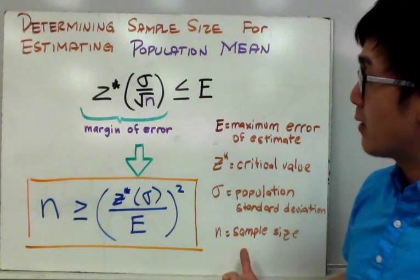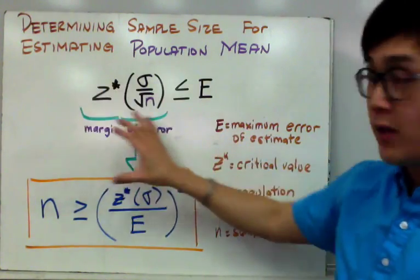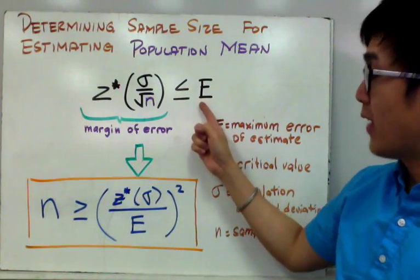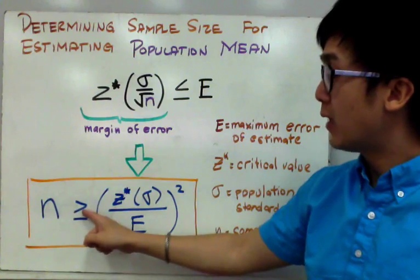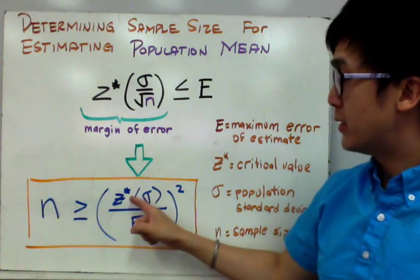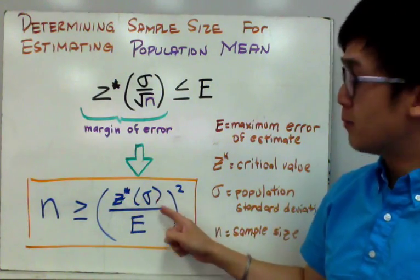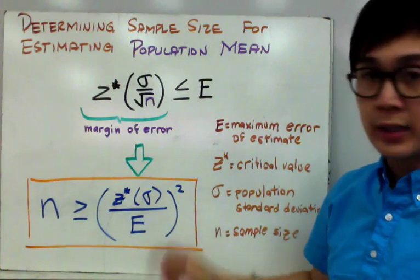The formula that we are going to derive out of our margin of error and our maximum error of estimate will give us sample size should be greater than or equal to z star times population sigma all over E, quantity squared.